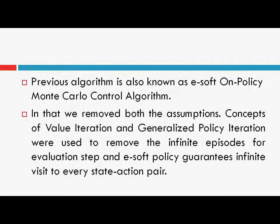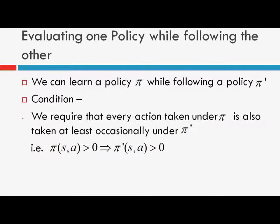The previous algorithm is known as the on-policy Monte Carlo control algorithm. As already mentioned, this removes both assumptions: the concepts of value iteration and generalized policy iteration were used to remove the requirement for infinite episodes in the evaluation step, and the epsilon-soft policy guarantees infinite visits to every state-action pair, so the assumption of exploring starts is no longer needed. Now just a single algorithm remains before we go into off-policy Monte Carlo methods, and this method will be used in the off-policy Monte Carlo control algorithm.